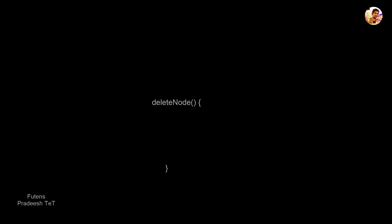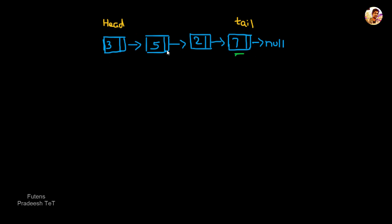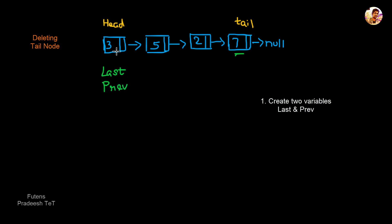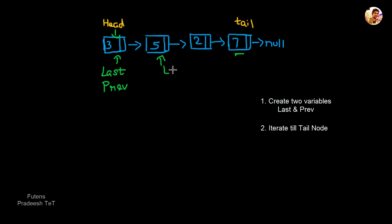We can delete a node using this concept. Now for the tail node deletion — we use a current variable and a previous variable. We initialize current starting from the head, and previous is also starting from the head. We then traverse the linked list to find the last node.